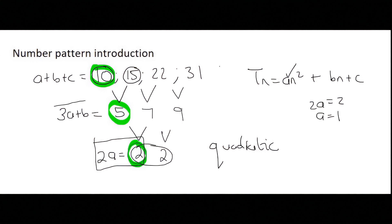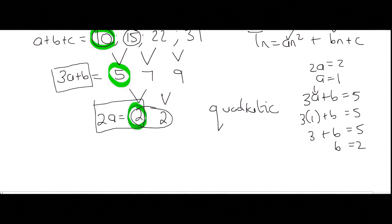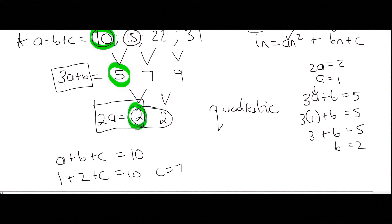Moving up one level, 3A + B = 5. Since A = 1, we get 3 + B = 5, so B = 2. Then the last equation: A + B + C = 10. With A = 1 and B = 2, we get 1 + 2 + C = 10, and solving gives C = 7.